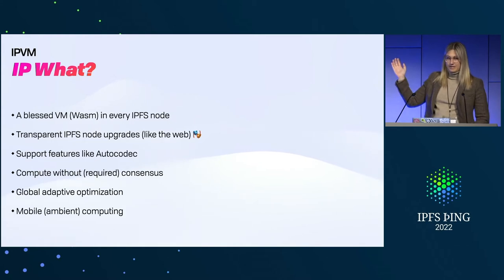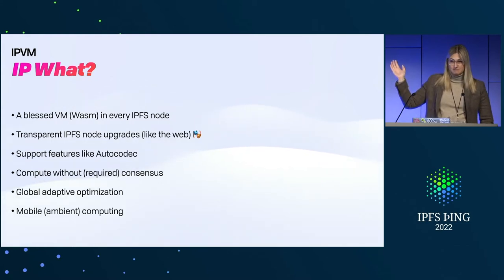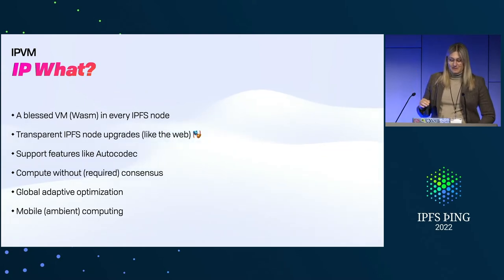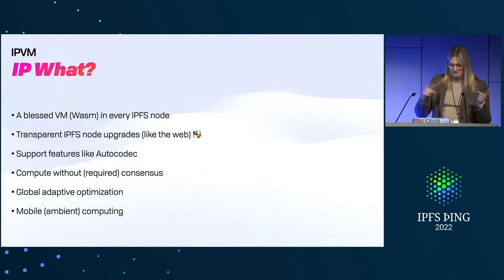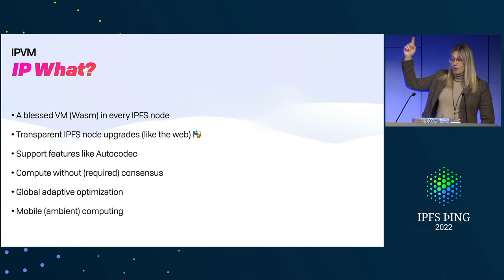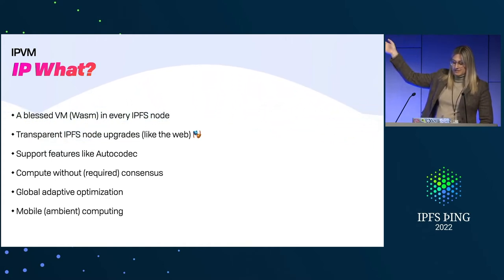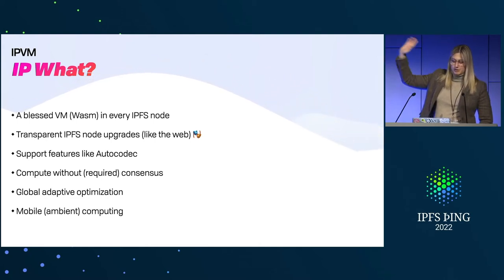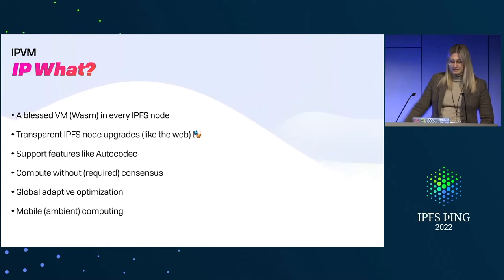The web is by far the best distribution system that we've ever built as a society. It can support features like autocodec, which is the next talk — stick around for that one. You can compute without required consensus; you can still do consensus, but without it being required, so you don't have to go out to, say, the FVM. You can run things yourself. You can do global adaptive optimization, which we'll talk about at the end.